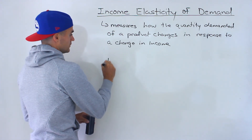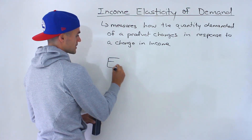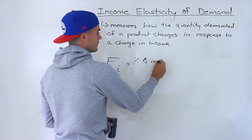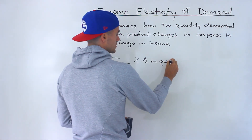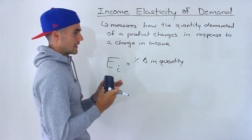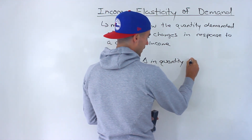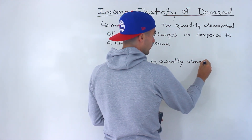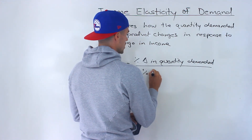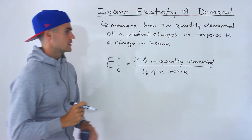The formula for it — the coefficient, we can label it elasticity with a subscript i for income — is basically the percentage change in quantity demanded. This is all in terms of one product, unlike cross elasticity of demand where we label product A and B. It's the percentage change in quantity demanded of that product over the percentage change in income of the consumer.